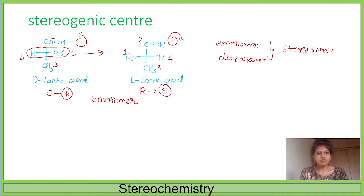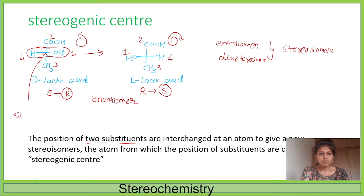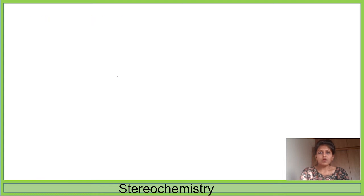This carbon is known as the stereogenic center. Finally, when the positions of two substituents — here hydrogen and OH — are interchanged at a carbon atom, it will give a new stereoisomer. R becomes S, giving a new stereoisomer. The atom at which the positions of substituents are changed is called the stereogenic center, and this process is known as stereogenicity.